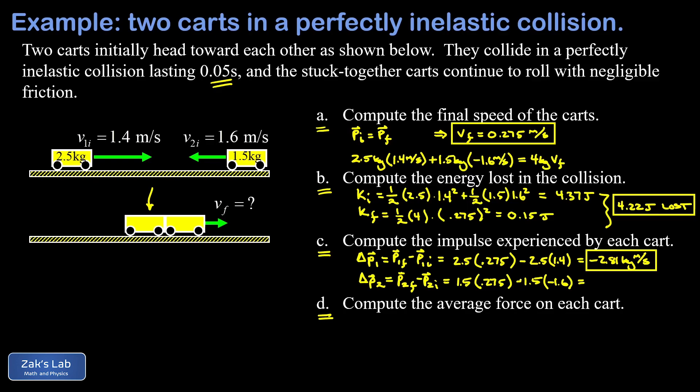So we end up with a double negative on that term and we end up with an impulse experienced by this car of positive 2.81 kilogram meters per second. Notice what happened - one of the impulses was negative, one was positive, and they have exactly the same magnitude. This is just because momentum is a conserved quantity. The sum of all the changes in the momenta in a problem should add up to zero, provided there's no net external force on the system.